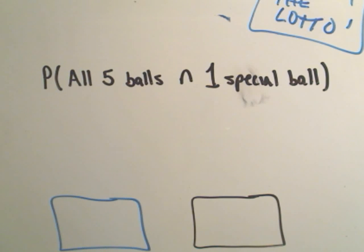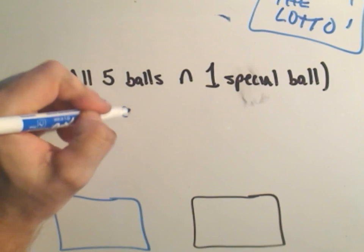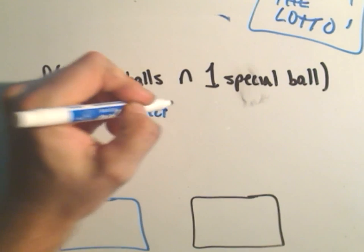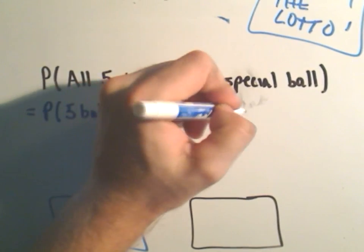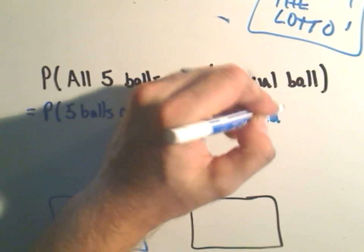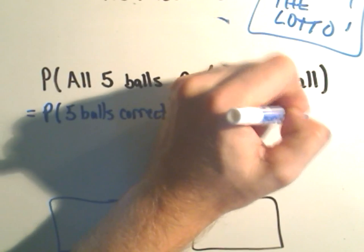So, in this case, these are going to be independent events. So we have to calculate the probability of picking the five balls correctly. And we'll multiply that by the probability of us picking the one special ball correctly.